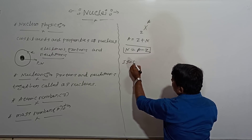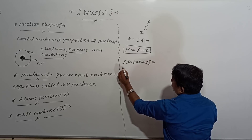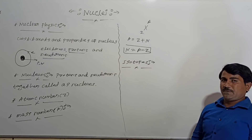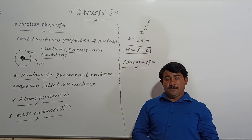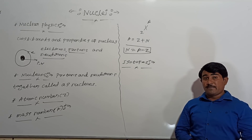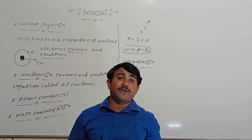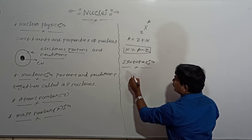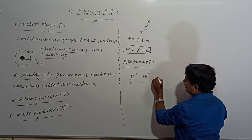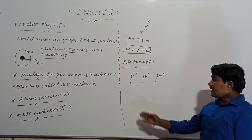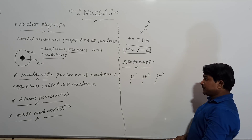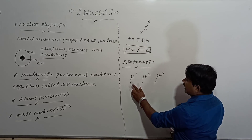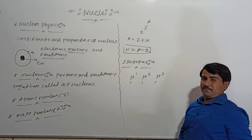The next term is isotopes. Isotopes are the nuclei which have the same atomic number but different mass number. For example, the isotopes of hydrogen: you can have three nuclei with mass numbers one, two, three and atomic number one, one, one. These nuclei have the same atomic number but different mass number — those we are calling isotopes.